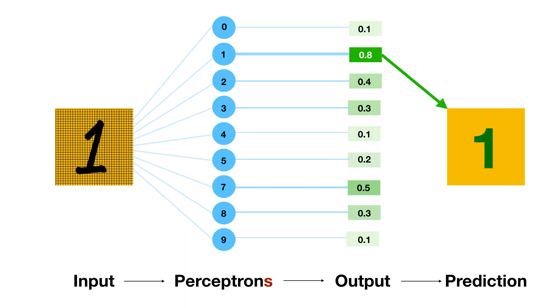We're actually going to do it a different way: we're going to have 10 perceptrons running in parallel, and whichever perceptron outputs the highest number is the digit we predict. We basically have a perceptron responsible for classifying zeros, another for classifying ones, and so on. Whichever one has the highest output is the prediction that our whole classifier makes.